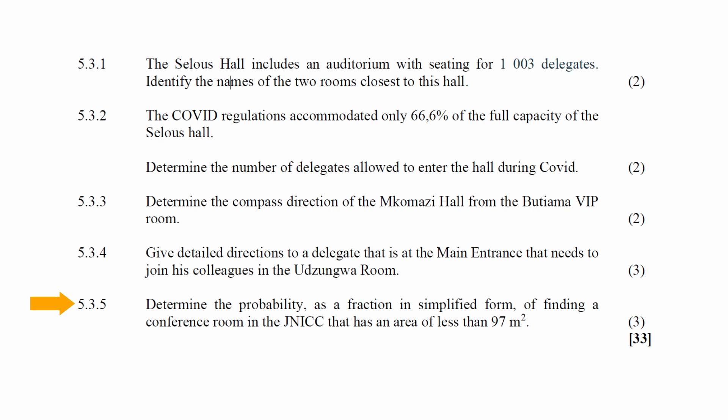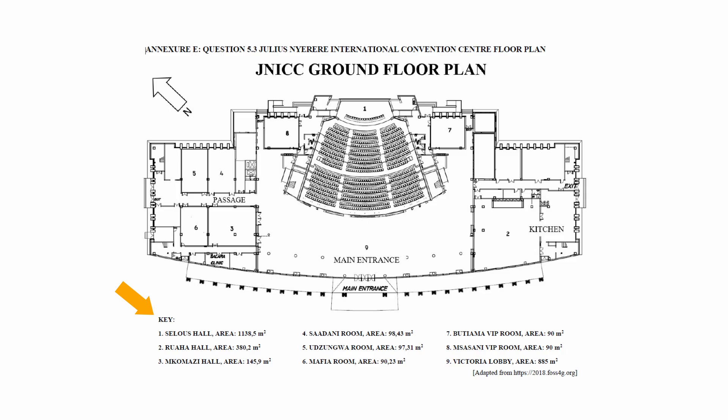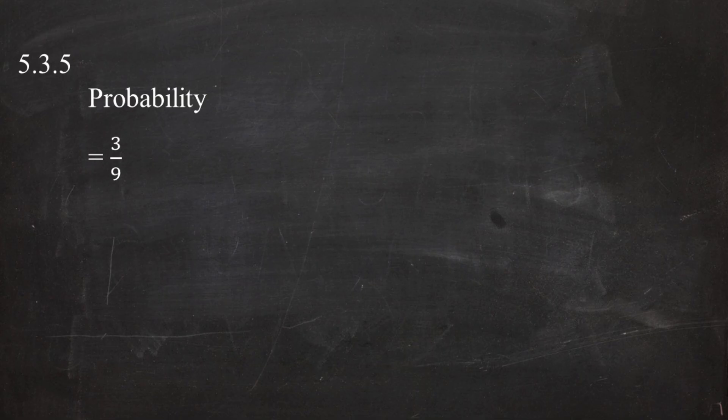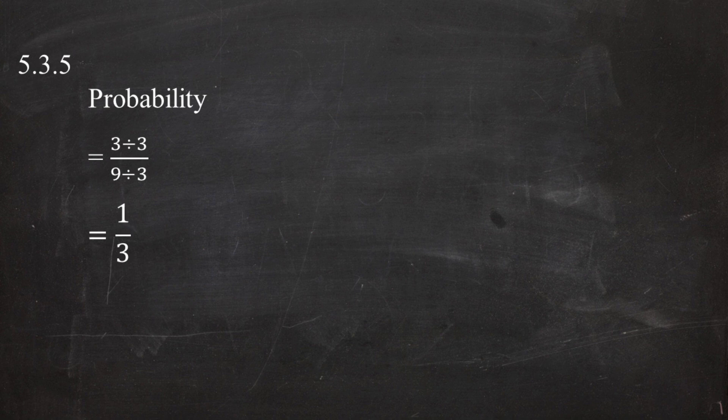In question 5.3.5, you are instructed to determine the probability as a simplified fraction of finding a conference room in the JNICC with an area of less than 97 square meters. From the number keys in Annexure E, there are nine total areas and three have areas less than 97 square meters. The probability is 3 out of 9, which simplifies by dividing both numerator and denominator by 3 to give one-third.